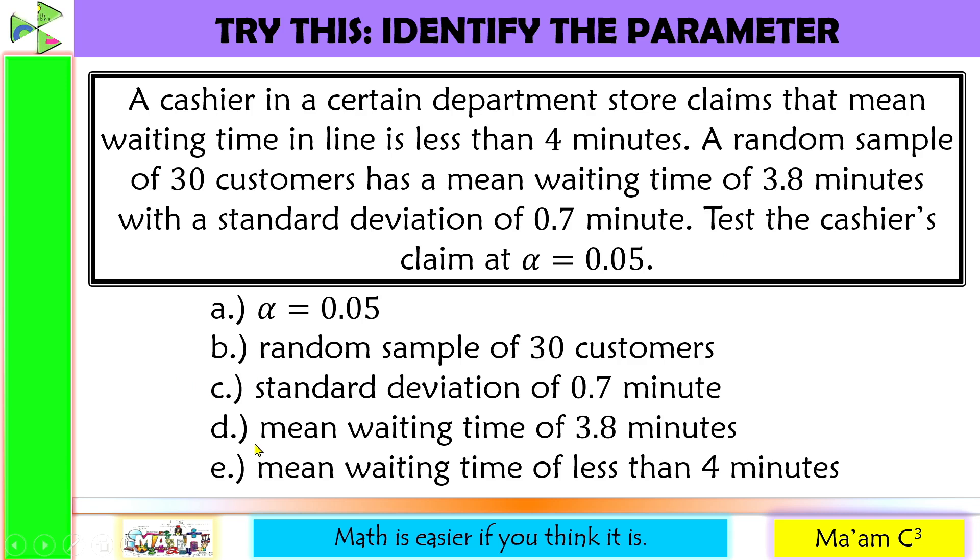Letter D, mean waiting time of 3.8 minutes. Let's find out where does this came from. Mean waiting time of 3.8 minutes came from the 30 customers, which is, again, the sample. Since this data is about the sample, so this is not parameter.